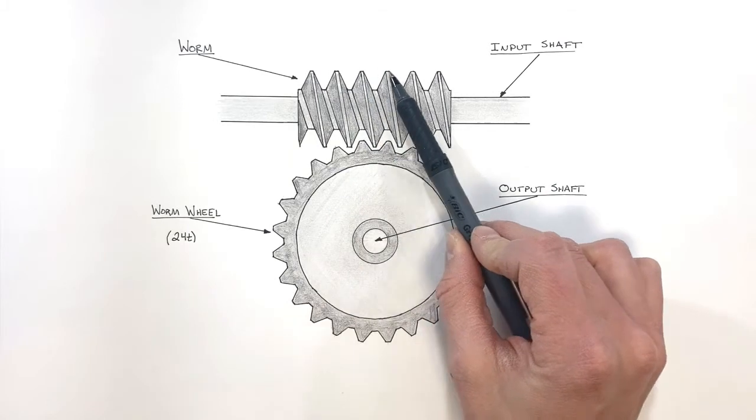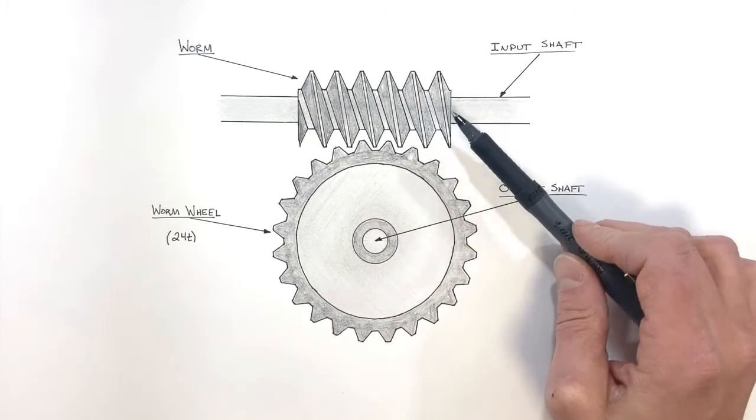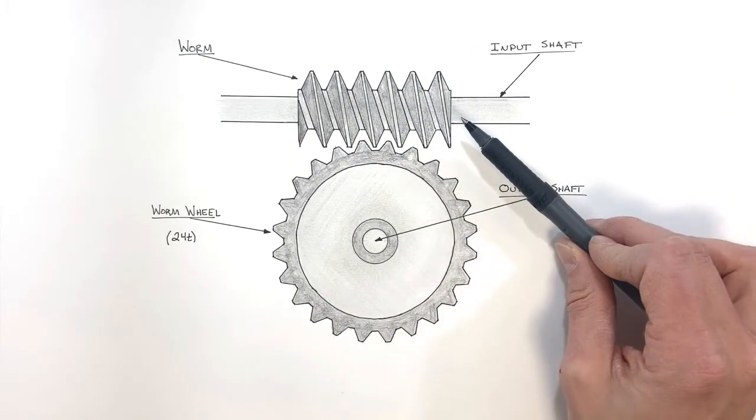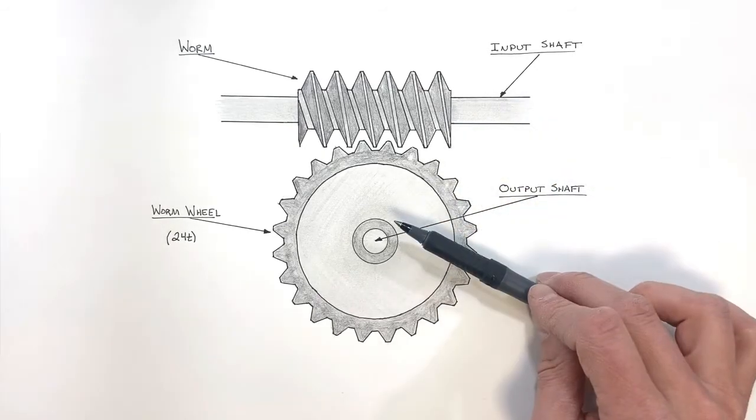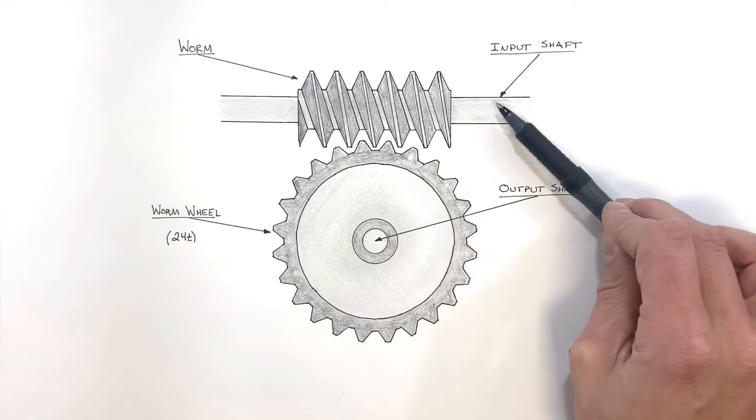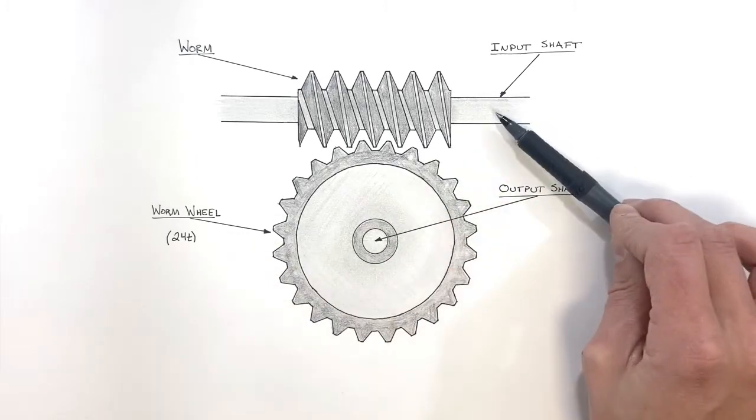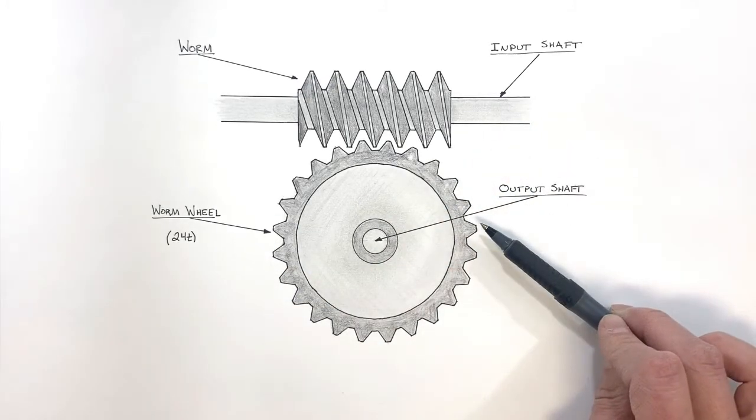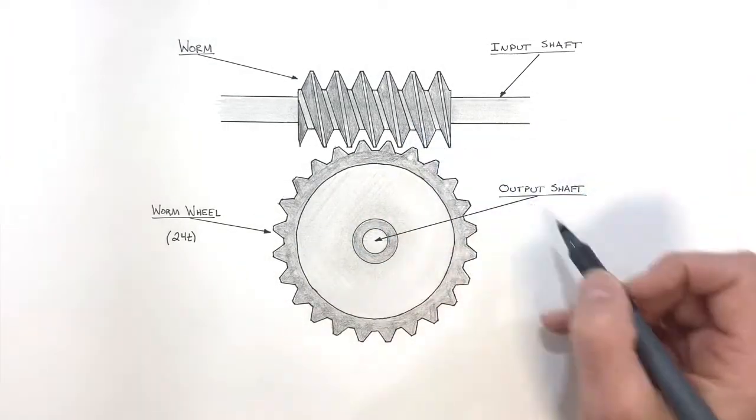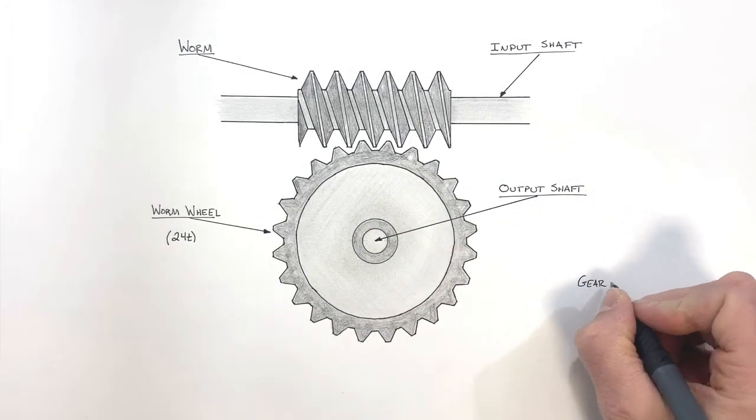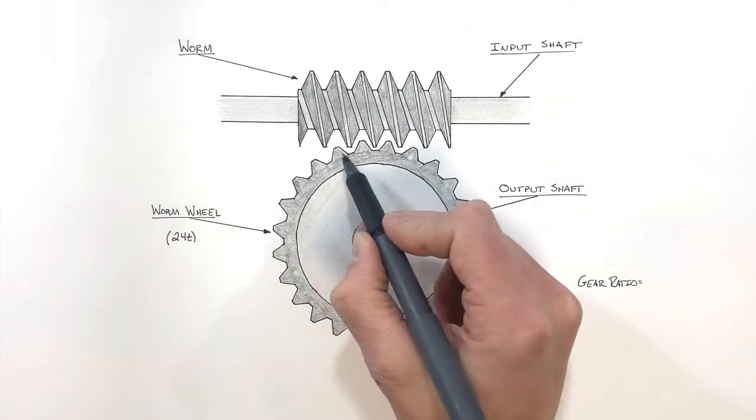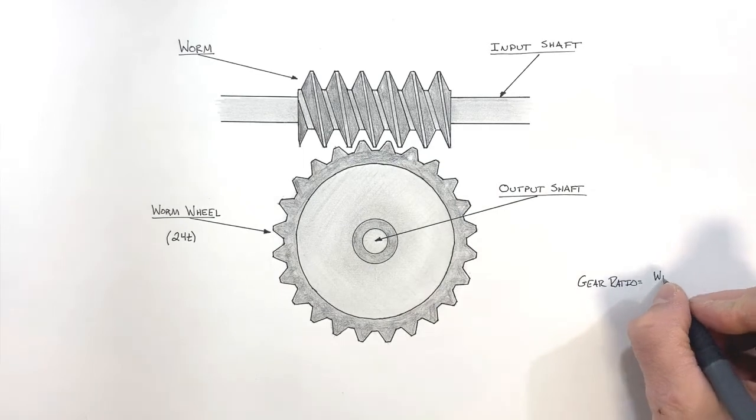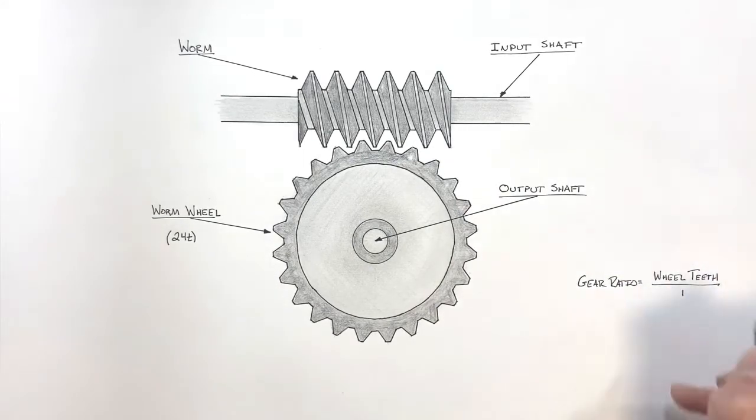It's tempting to start counting teeth on this worm gear, but that's not really what's going on here. What we need to do is look at rotations. For every 24 rotations of our input shaft, we're only going to see one rotation of our output shaft. So for this worm gear assembly, the gear ratio is actually going to be the number of teeth on our worm wheel over one.